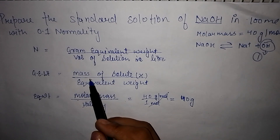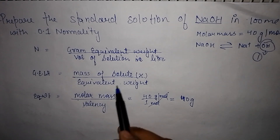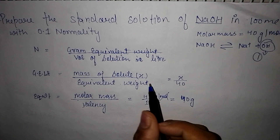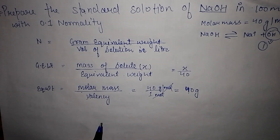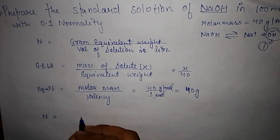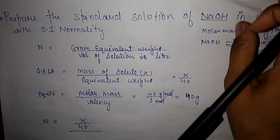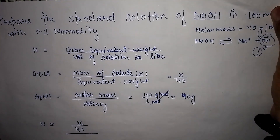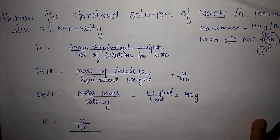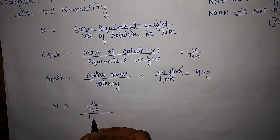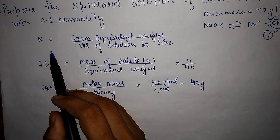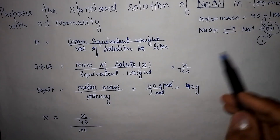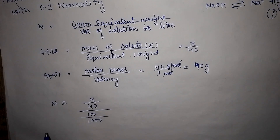Now we put the values into the normality formula. We calculated equivalent weight as 40, so gram equivalent weight equals x divided by 40. The volume of solution is 100 milliliters. In the normality formula, volume must be in liters, so we convert 100 milliliters by dividing by 1000.